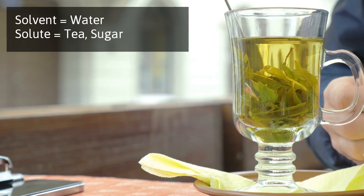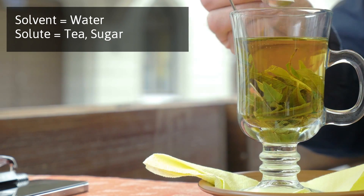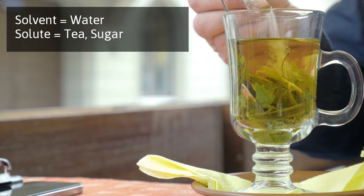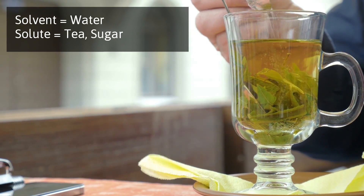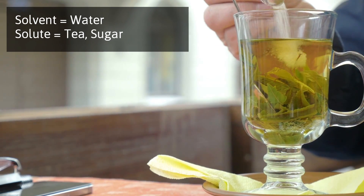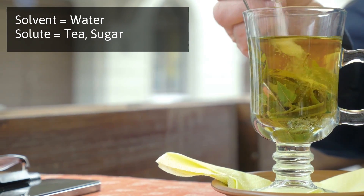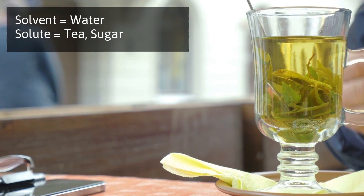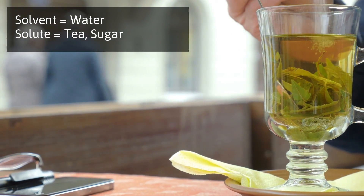Next, you have a cup of tea. The solvent is the water. The solute is the soluble portions of the tea, along with the sugar.